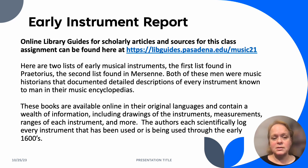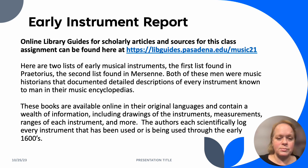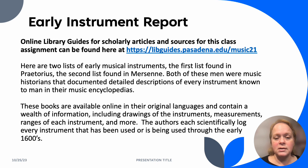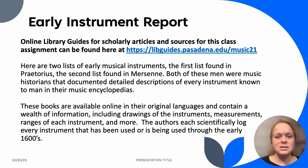This is a fantastic opportunity to utilize those online library guides for scholarly articles and sources for this class. There are two lists of early musical instruments: the first from Praetorius, the second from Mersenne. Both were musical historians who documented detailed descriptions of every instrument known in their encyclopedias. These books are available online and contain drawings, measurements, ranges, and more, documenting instruments used through the early 1600s.